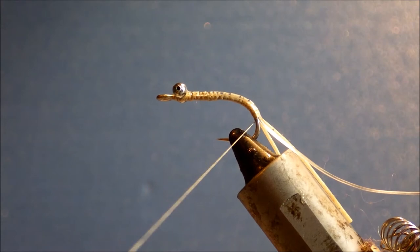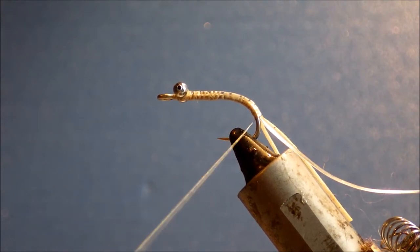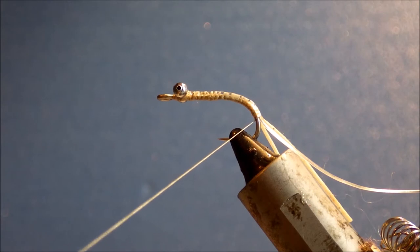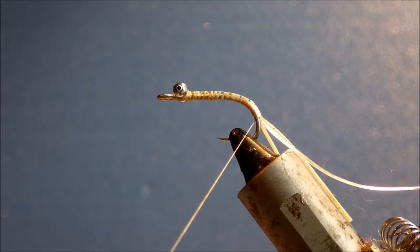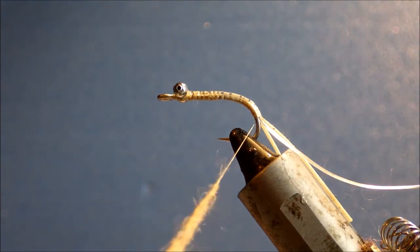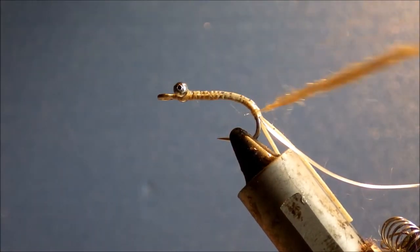So just dub the thread and leave it fairly shaggy. You don't need an incredibly tight rope for this. It's not super sparse. So when you're ready just slide the dubbing up the thread and get it started at the back there.